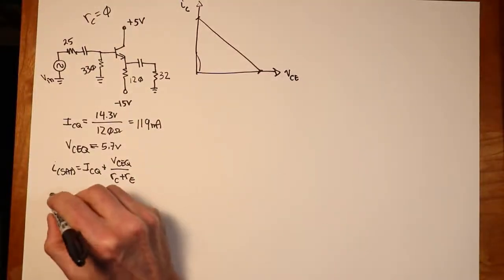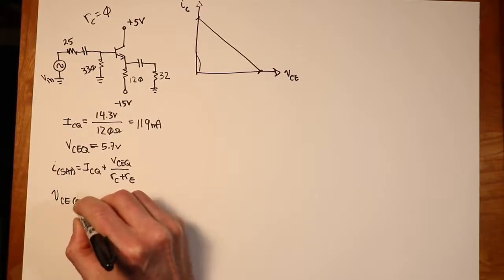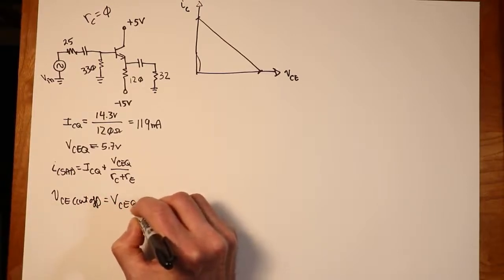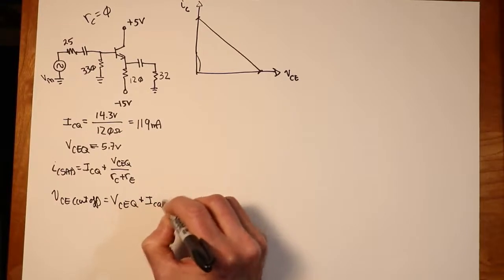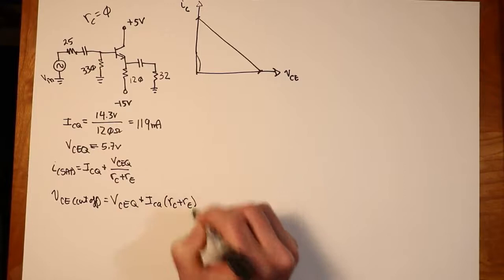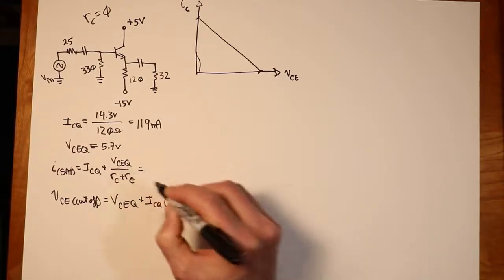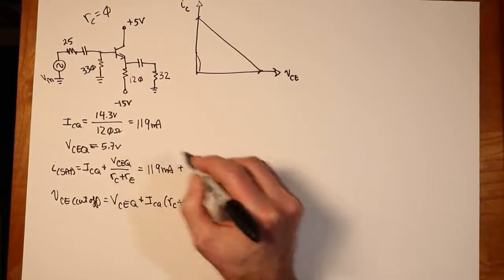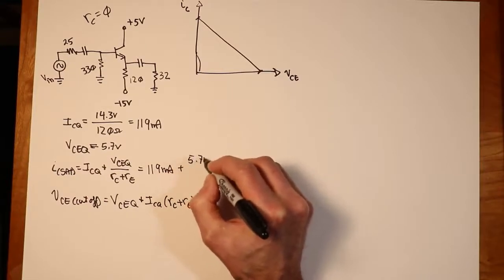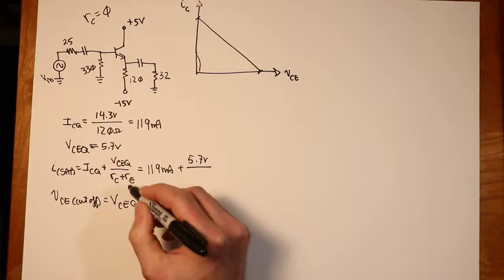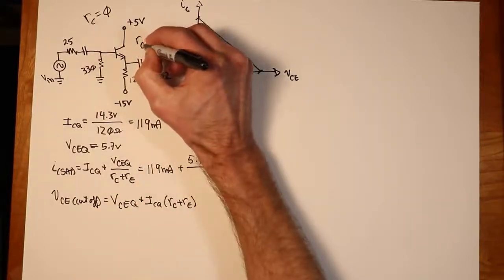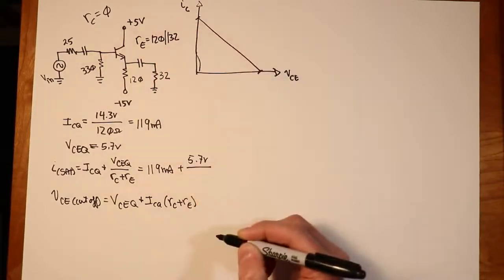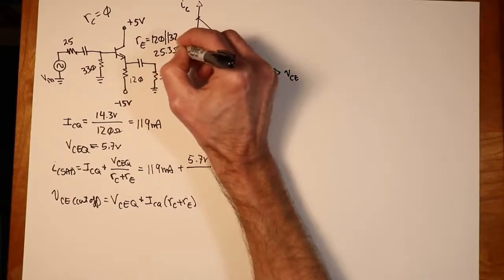So same kind of thing with the gain. We would just assume that's a non-inverting gain of 1. Continuing back here, our VCE cutoff is going to equal VCEQ plus ICQ times RC plus RE. So back here, the ICQ we know is 119. The VCEQ we know is 5.7. And like I said, RC is 0. What is RE? This is the AC value of emitter resistance. So that's equal to 120 in parallel with 32 ohms. That's 25.3.